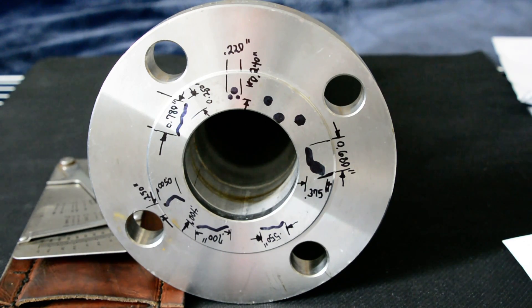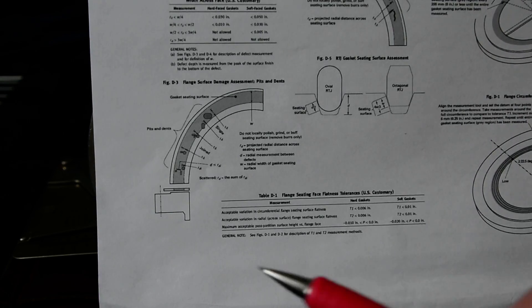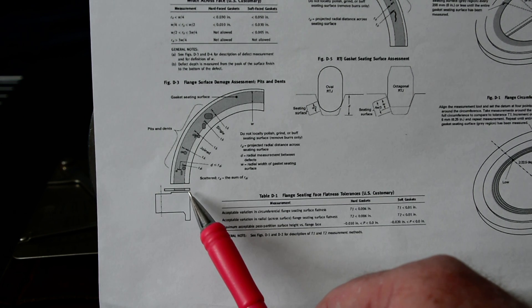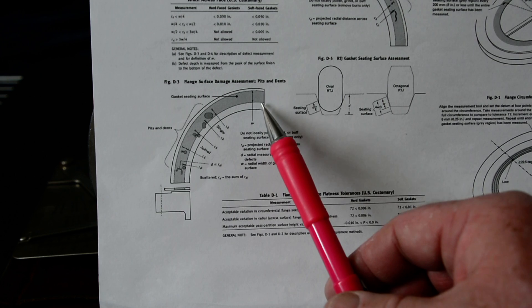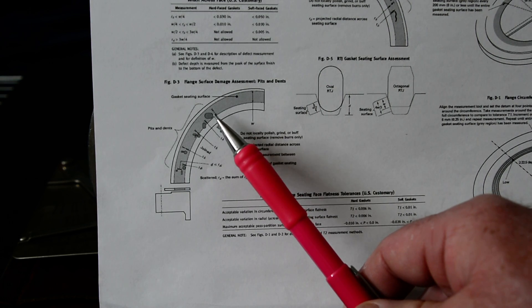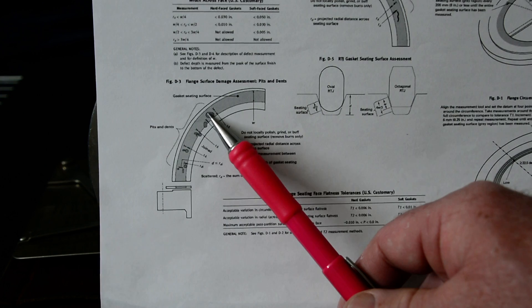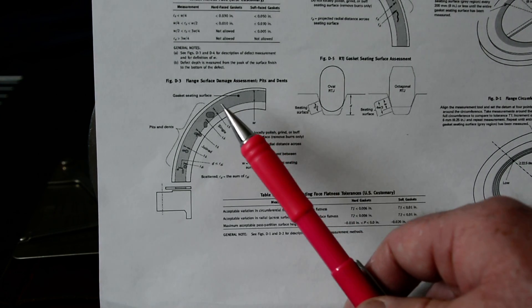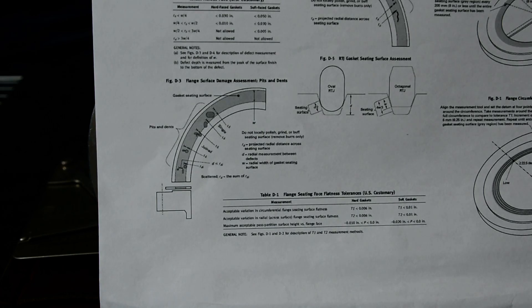We want to discuss tables D2, the allowable defect depth and width across the face, and then we want to discuss figures D3 and D4. I made a little sheet. When we're talking about the PCC-1 and the flange width, here in this cross section you see the raised face. The width W in the diagram is not the entire width of the raised face. It's the gasket engagement width.